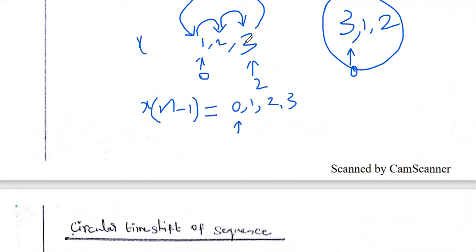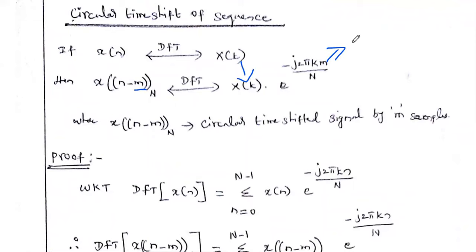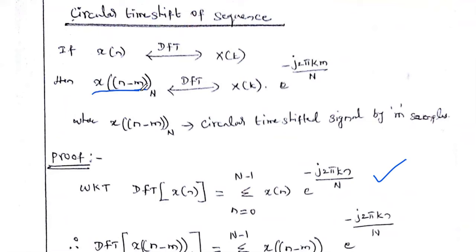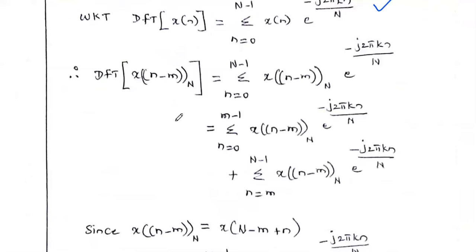Within N samples, the values are shifting circularly — the amplitude 3 is not shifted to the next position beyond the sequence, but wraps to the first position. Now we need to prove this property. To prove it, we start with the ordinary DFT formula: X(K) = Σ(n=0 to N-1) x(n) · e^(-j2πKn/N). Our aim is to calculate the DFT of the circular time shifted sequence x((n-M))_N.